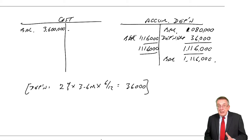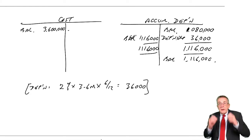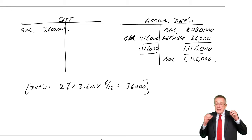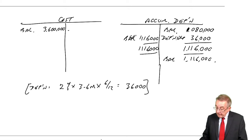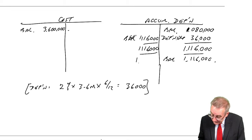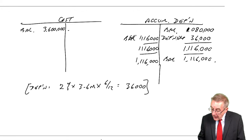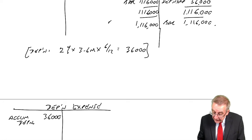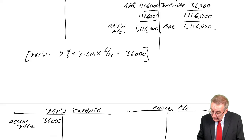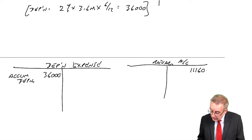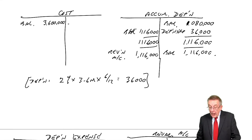So what we do — I want to effectively start all over again with £3.072 million as the value. The first thing we do is get rid of that accumulated depreciation. Debit the accumulated depreciation £1.116 million, and credit a revaluation account £1.116 million.